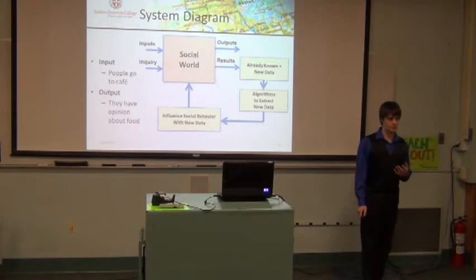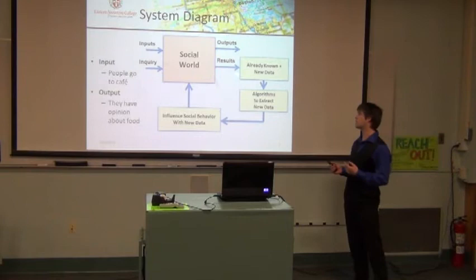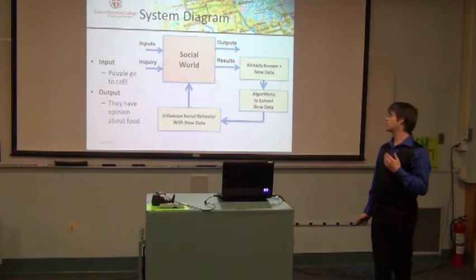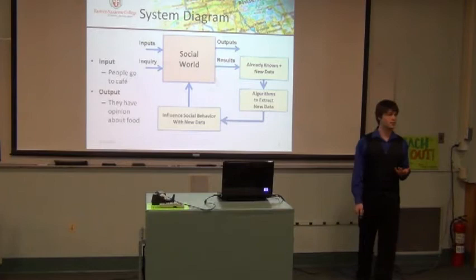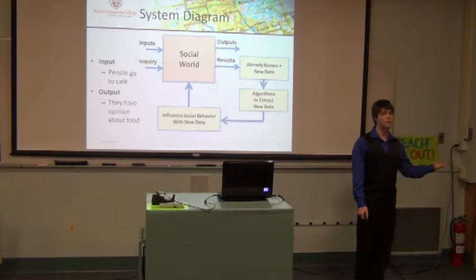We would first have a survey, get the survey results combined with what we already know and the new data. Then we would use algorithms that the company has already come up with to try to get new data from that — new data that maybe isn't told to us directly, something like motivations. If a person is disagreeing with the rest of the group, there's more behind that disagreement than just the number showing he disagrees.